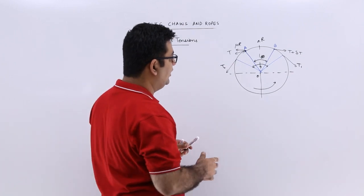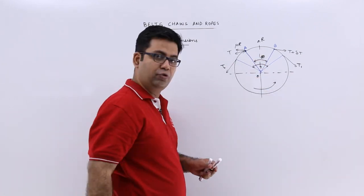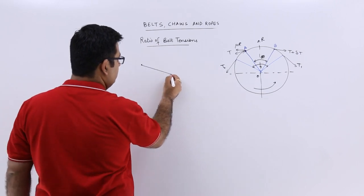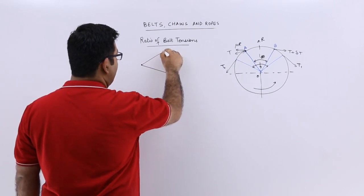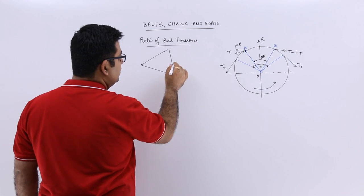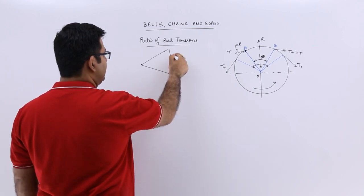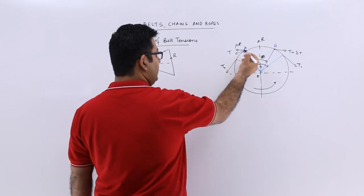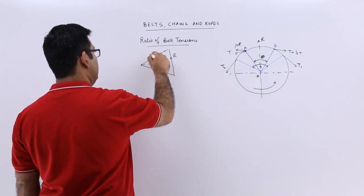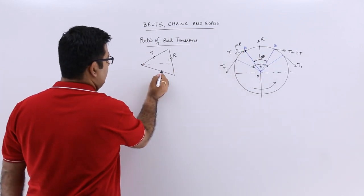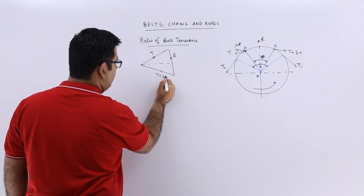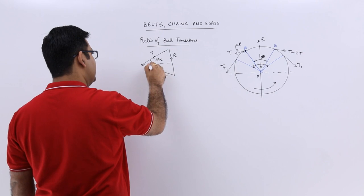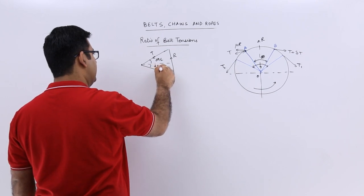If you look at the forces, you have such a triangle forming. The vertical force is capital R. This is T, and that force in this direction is T plus δT, with angles dθ/2 on each side.